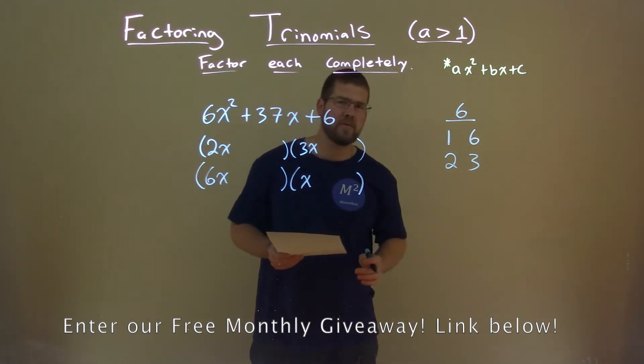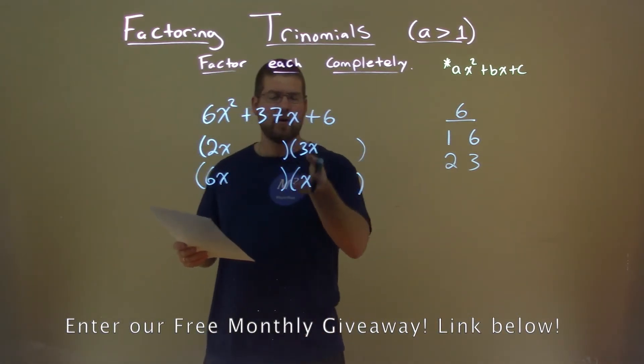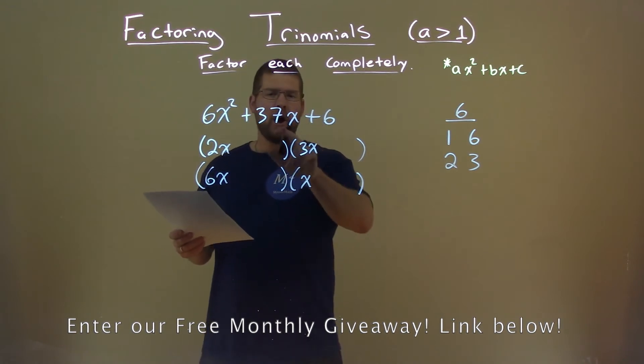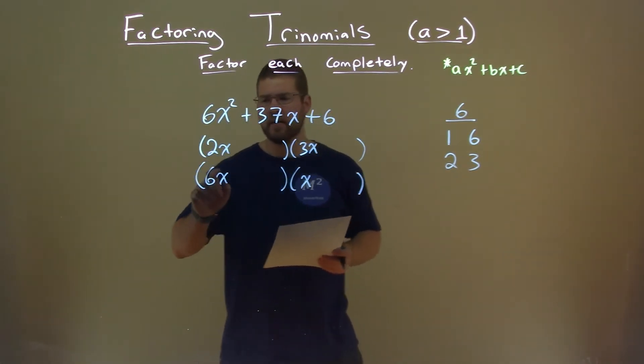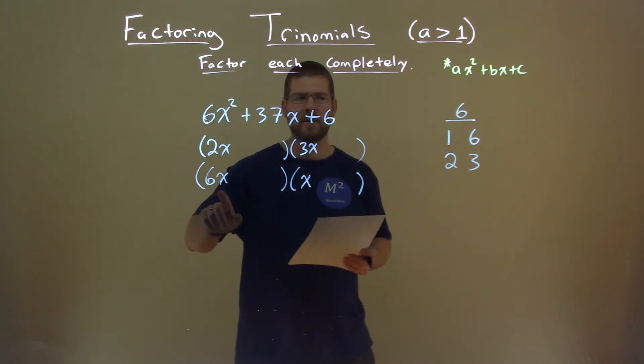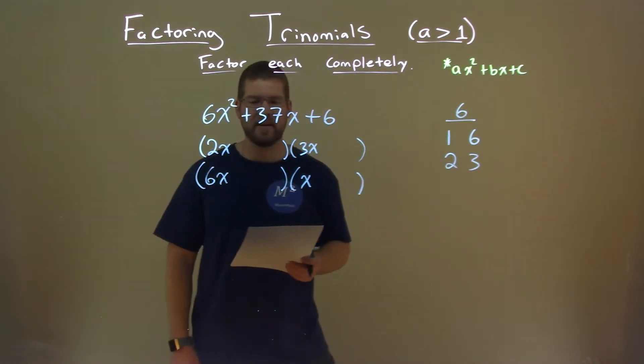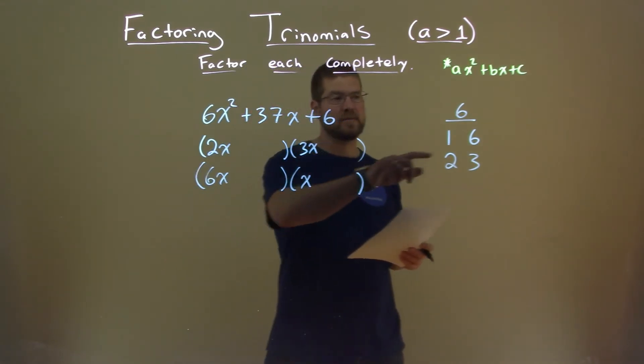So these numbers, the pairs that we're dealing with, and we look at now our options to set up. Our b value is 37. So what I try to look for first here is say, okay, which number here times which one here gets me the closest to 37. And that's going to be, well, 6. So let's try that.